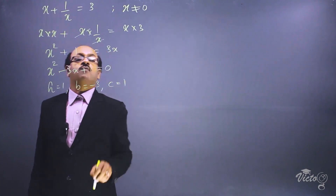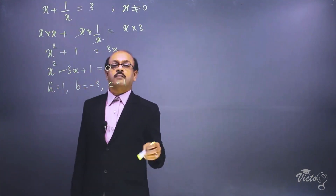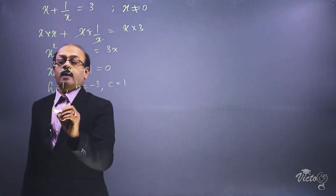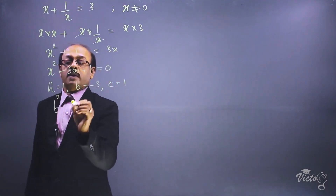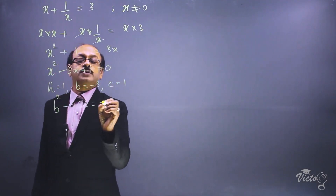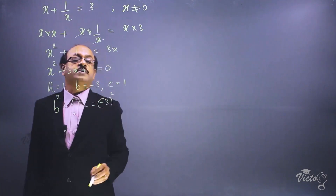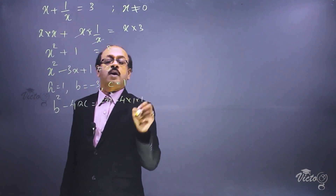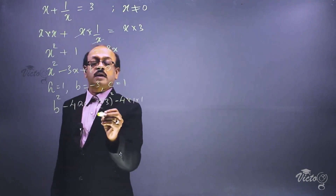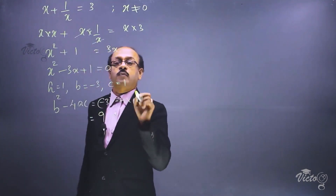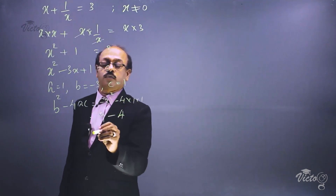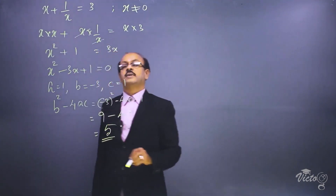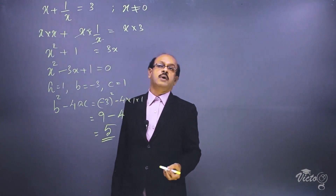From the equation x squared minus 3x plus 1 equals 0, the value of a is 1, b is minus 3, and c is 1. Now we find the discriminant: b squared minus 4ac equals minus 3 squared minus 4 into 1 into 1, which is 9 minus 4, equal to 5. So the discriminant is 5.